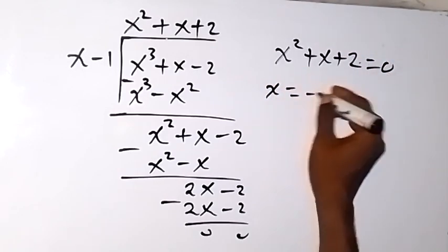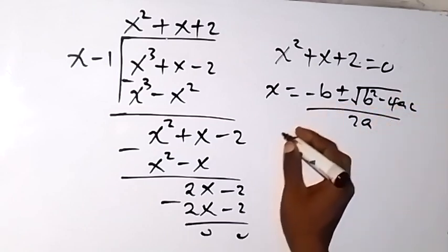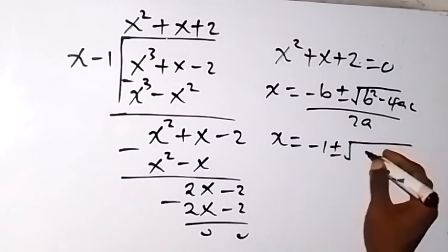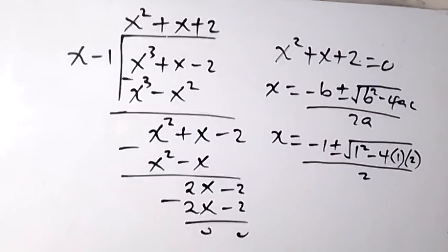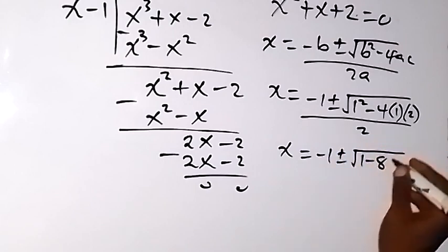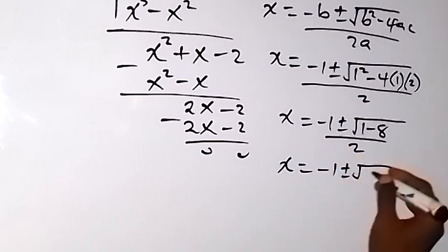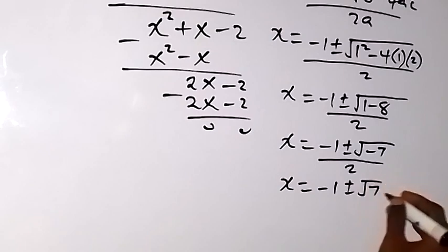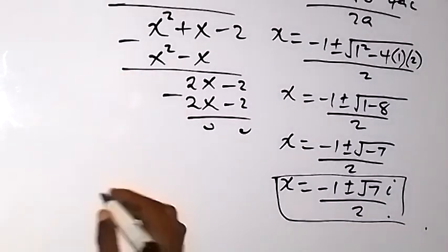The other factor is the quadratic x squared plus x plus 2 equals zero. Using the quadratic formula, x equals minus b plus or minus square root of b squared minus 4ac, all over 2a, where a equals 1, b equals 1, c equals 2. This gives x equals minus 1 plus or minus square root of 1 minus 8, all over 2, which is minus 1 plus or minus square root of negative 7 over 2 — a complex solution.